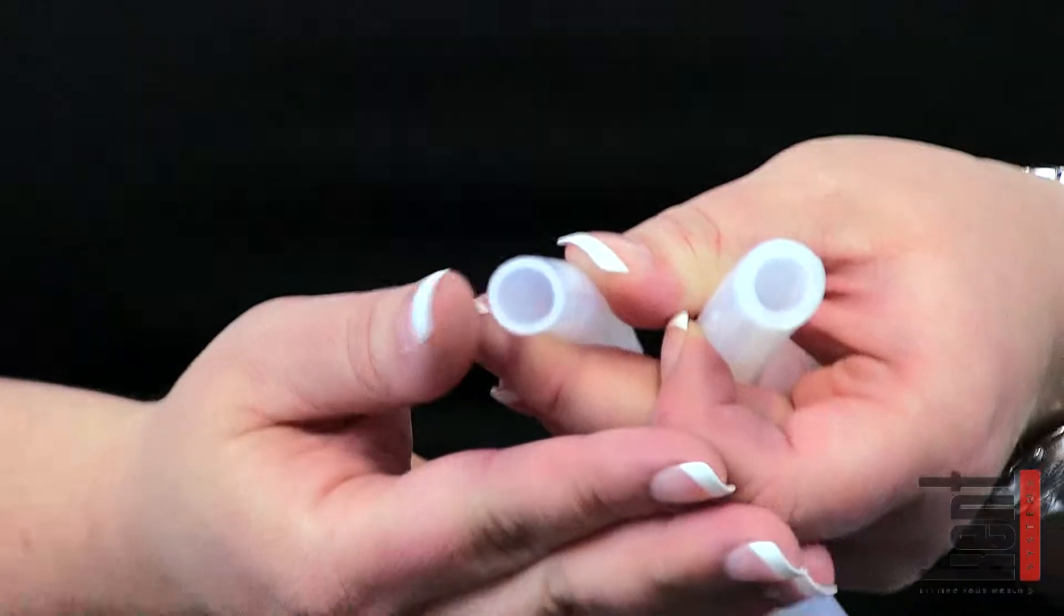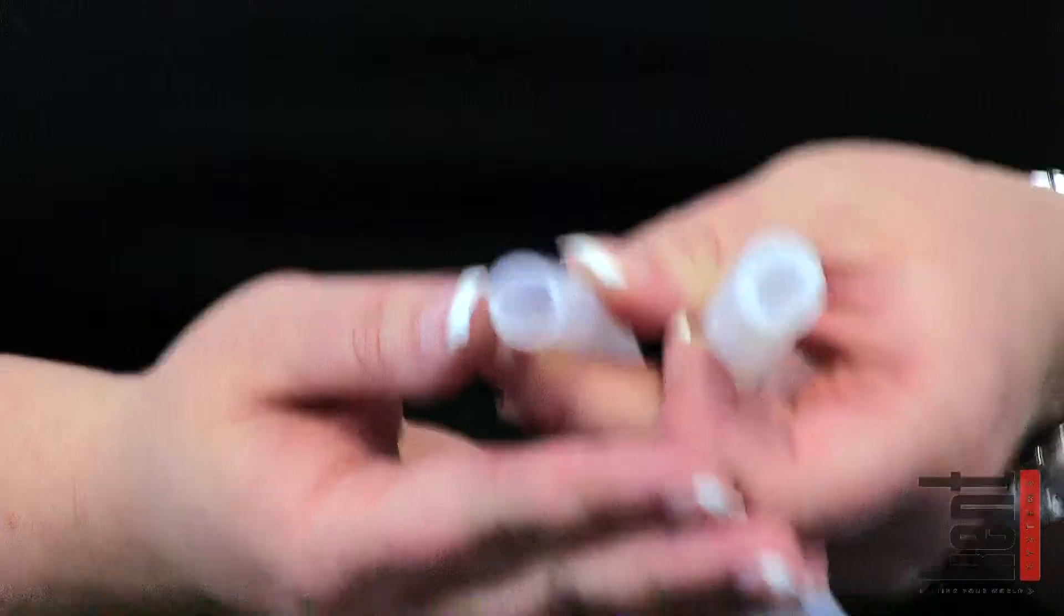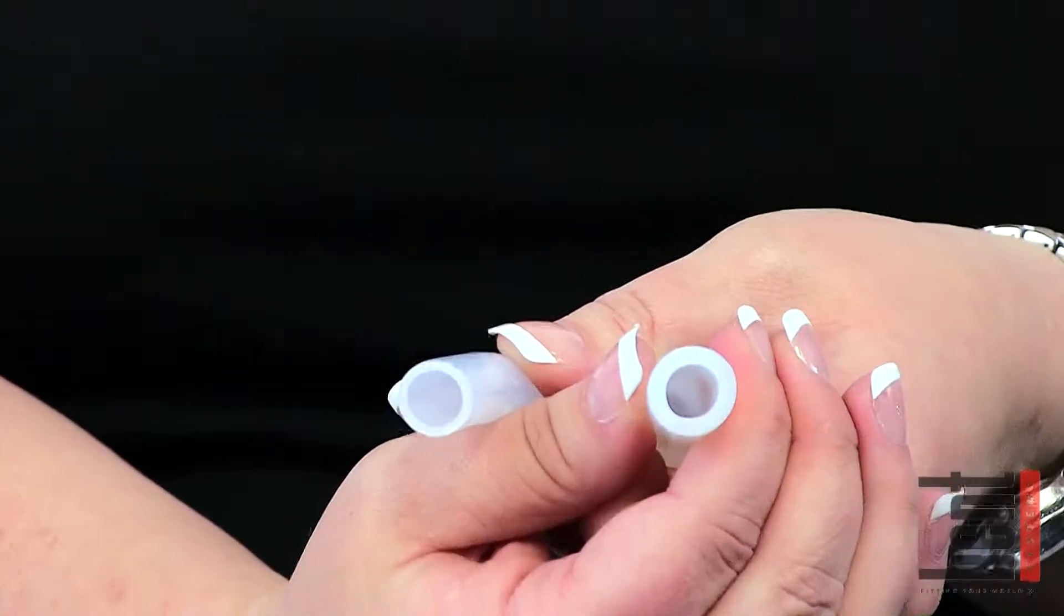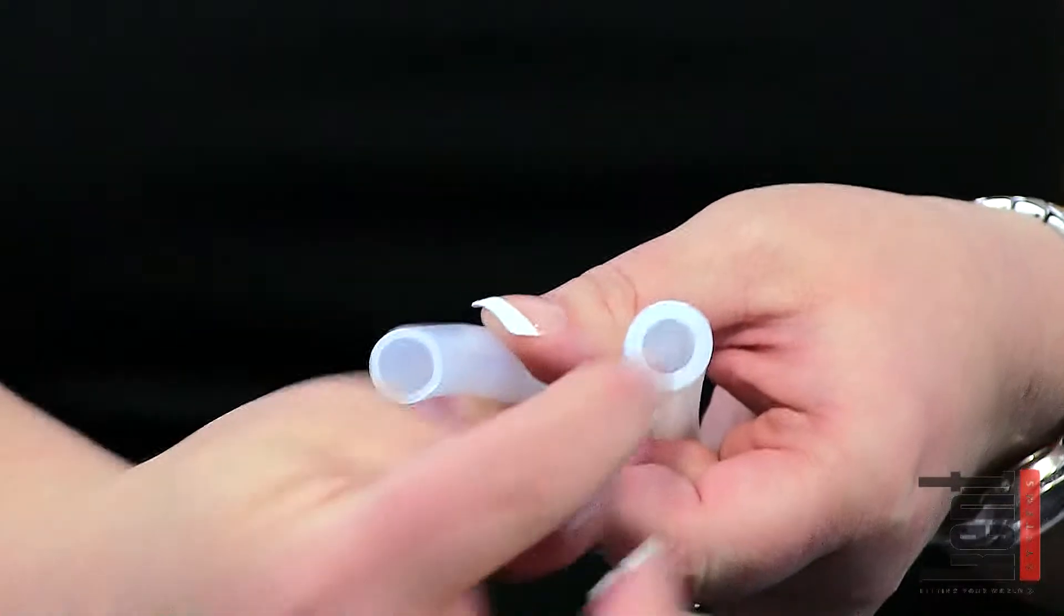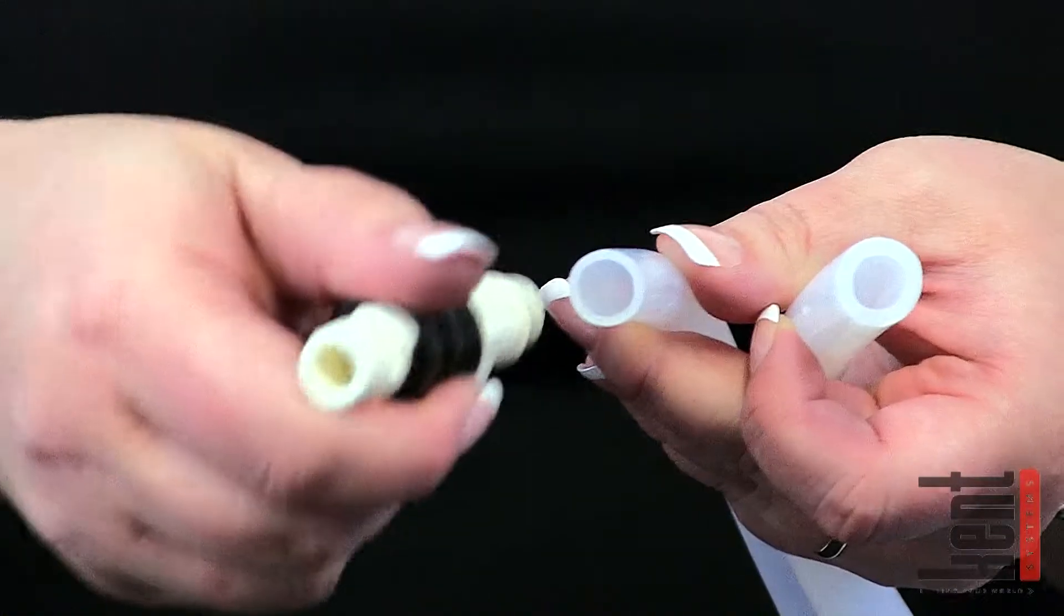The ID is the inner diameter, the OD is the outer diameter in your tubing. It's important for Kent Systems because we are concerned about the ID. The ID matches our barbs because the barbs go inside the tubing.